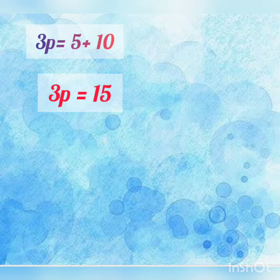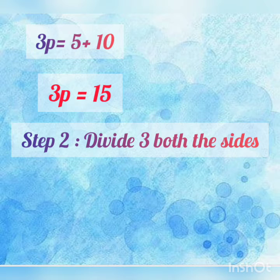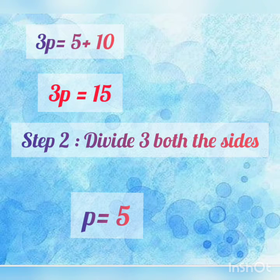Now children, the next step is to transpose 3 from LHS to RHS. We will write Step 2: divide 3 on both sides. That becomes p will be equal to 15 upon 3, so p will be equal to 5.